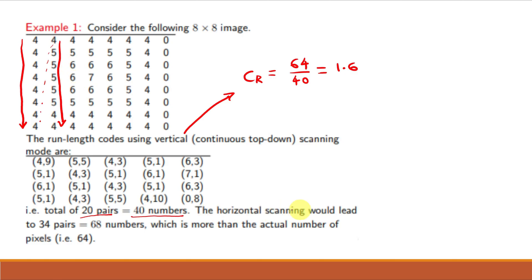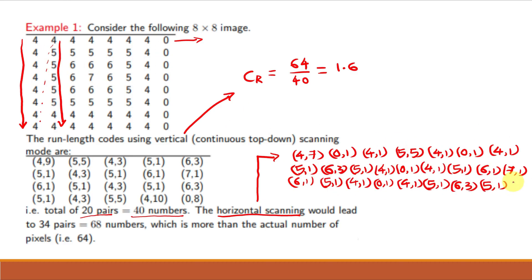But rather than this vertical scanning, if we are using horizontal scanning in this direction, then it will give different encoding. So these are 34 pairs, which is equal to 68 numbers. So compression ratio for this horizontal scanning will be... so this is negative compression or rather we can say that expansion.